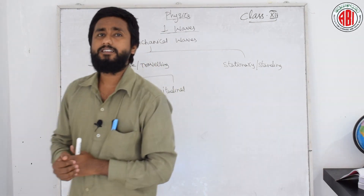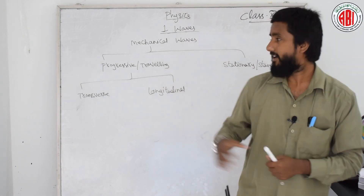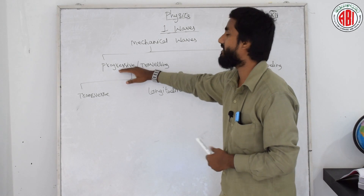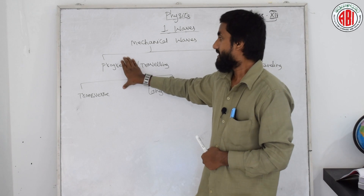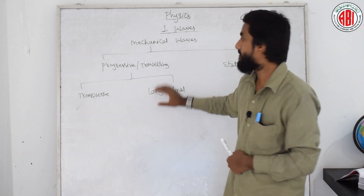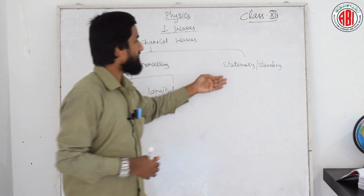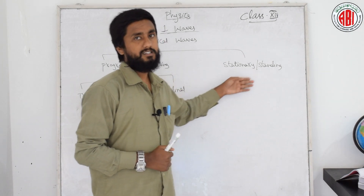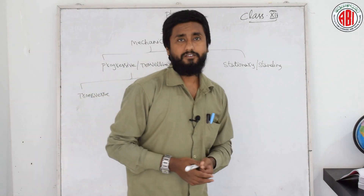As you can see, in this chapter on waves we are mainly dealing with mechanical waves. In mechanical waves we have progressive waves, also called travelling waves. Progressive or travelling waves consist of two types: transverse waves and longitudinal waves. One more type is stationary or standing waves. We will learn about stationary waves in detail in this chapter, as well as the parameters of progressive waves.